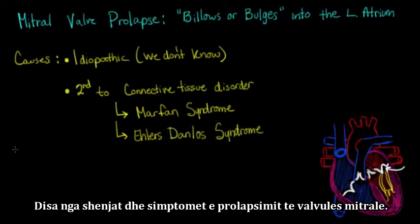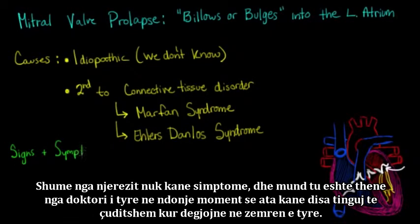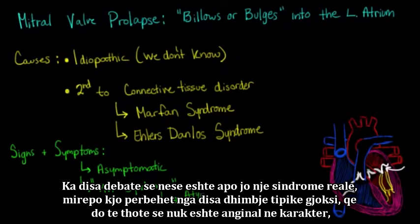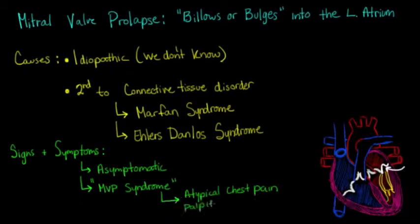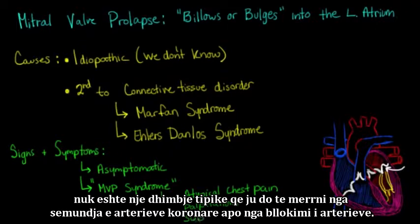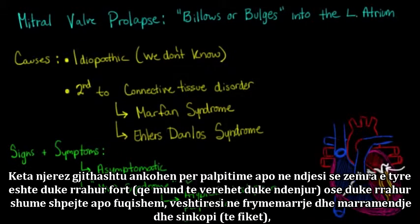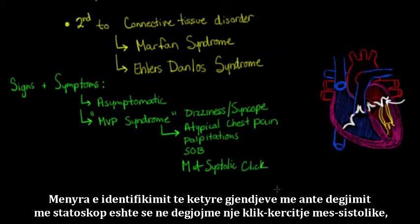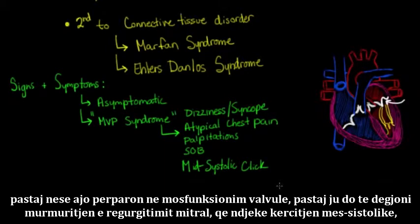Some signs and symptoms of mitral valve prolapse are a tough one. Many people are asymptomatic and may just have been told by their doctor that they had a funny sound when the doctor listened to their heart. But another group of people has symptoms that the medical community has labeled mitral valve prolapse syndrome — though there is some debate about whether this is a real syndrome. It consists of atypical chest pain (not anginal in character), palpitations, shortness of breath, and dizziness or syncope (fainting). On auscultation, we hear a mid-systolic click, and if it has progressed to valve dysfunction, the murmur of mitral regurgitation follows the mid-systolic click.